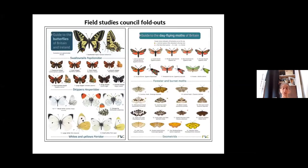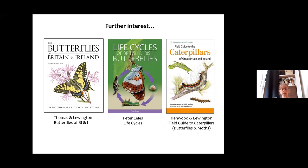The Field Studies Council produces laminated fold-out guides — very cheap, about £3.50 — including a butterfly guide. They're really handy and weatherproof. For further interest, Thomas and Lewington's Butterflies of Britain and Ireland has been a real strong resource with lots of detailed information.